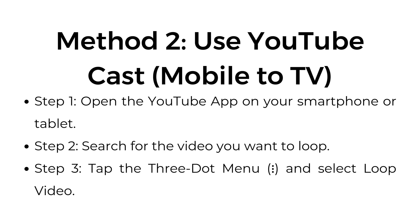Method two: use YouTube Cast, mobile to TV. Step one, open the YouTube app on your smartphone or tablet. Step two, search for the video you want to loop. Step three, tap the three-dot menu and select loop video.